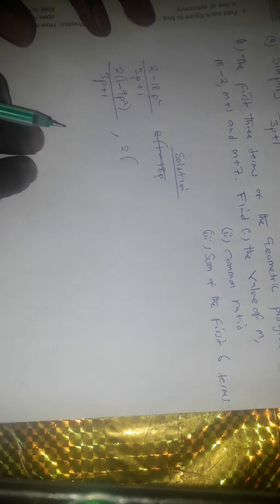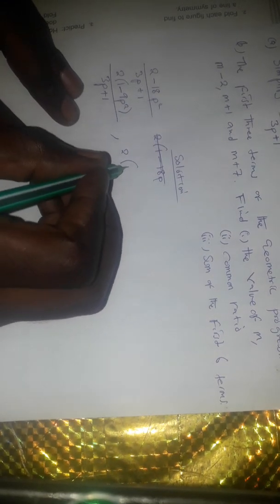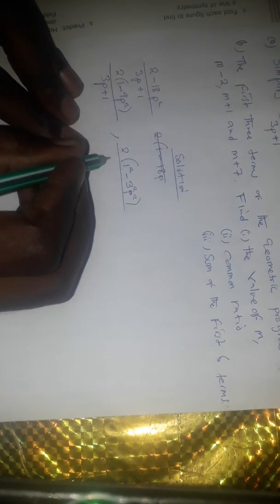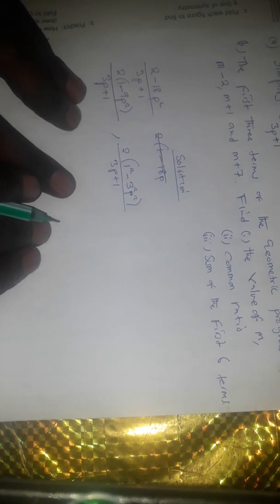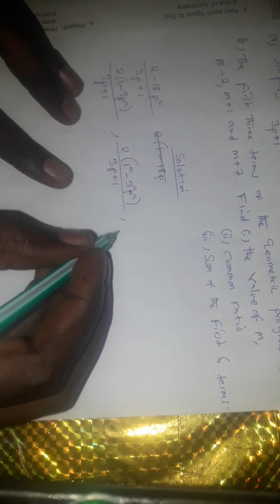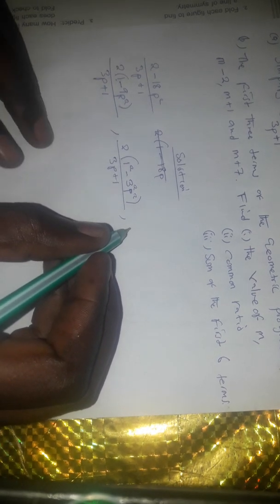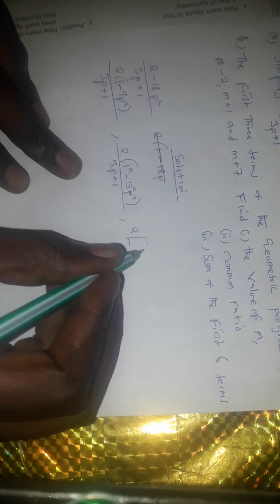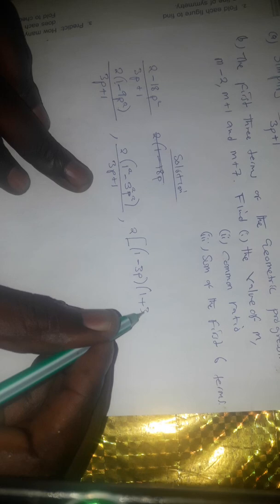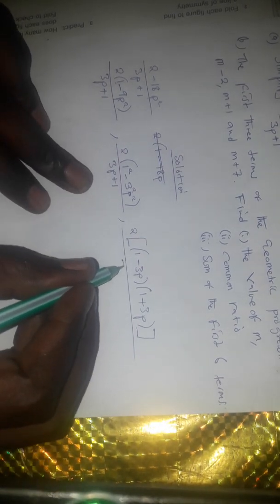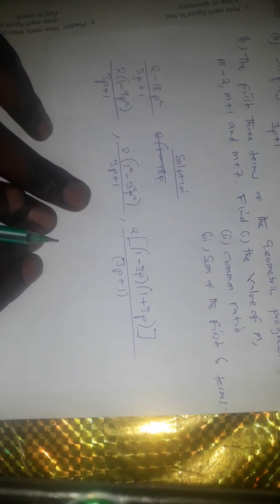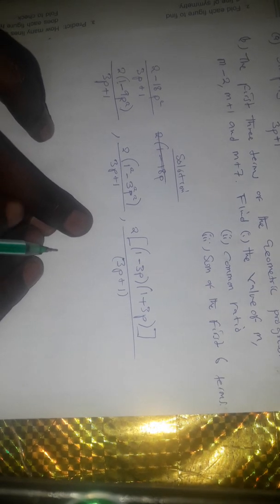The expression inside is going to be written in the form 1 squared minus 3 squared p squared, closed bracket, divided by 3p plus 1. The numerator can also be written — when we expand — as 2 outside, then this part gives us (1 minus 3p)(1 plus 3p). That is the implication of the difference of two squares, divided by 3p plus 1.